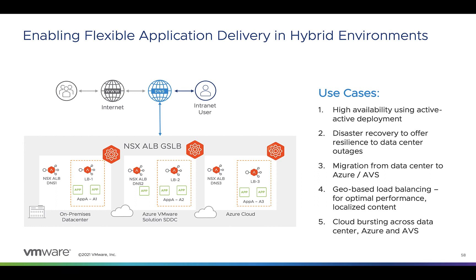In a traditional AVS lift-and-shift migration, we would leverage HCX to extend Layer 2 networks from the on-premises data center to the AVS private cloud, and then either do a live vMotion or cold migration to pick up the workload as-is and move it, retaining network configuration. Depending on your application and needs, it may make more sense to deploy additional instances of your application in the AVS private cloud, add both instances to GSLB for a period of coexistence and testing, and then remove the on-premises instances when you're fully ready to cut over. The big theme here is that the functionality you can expect in AVS is not really that different from the functionality you get on-premises, and that's exactly the point.